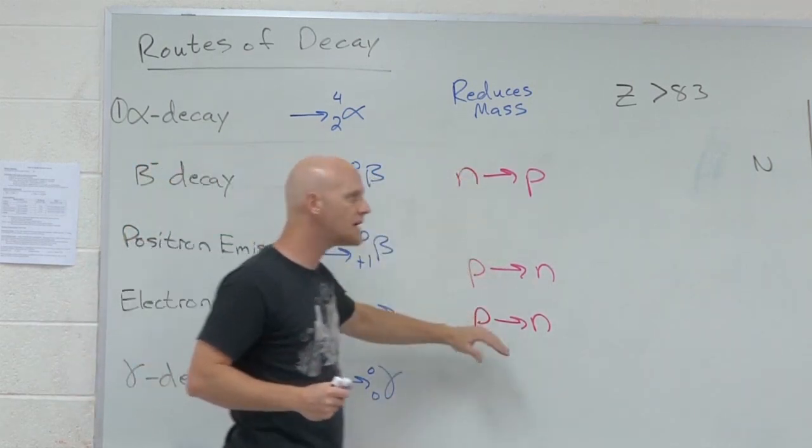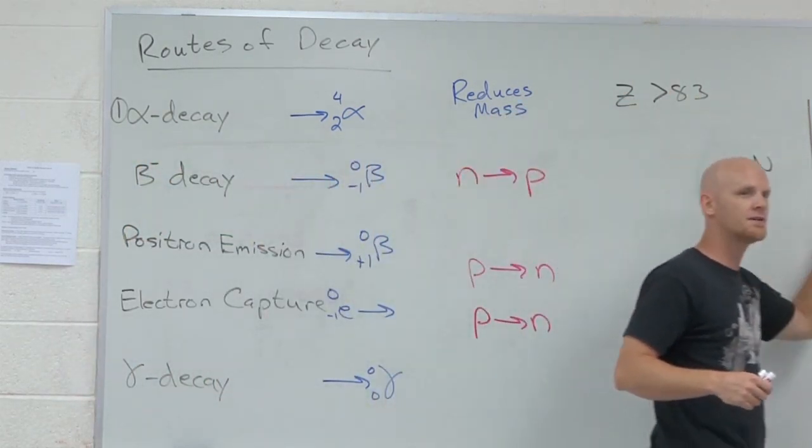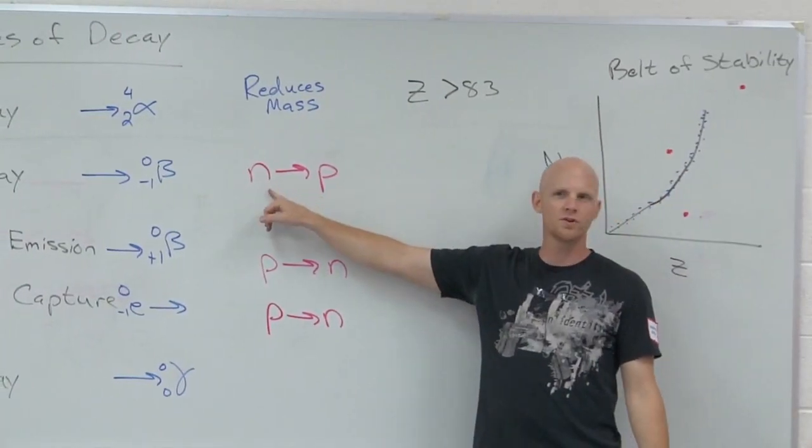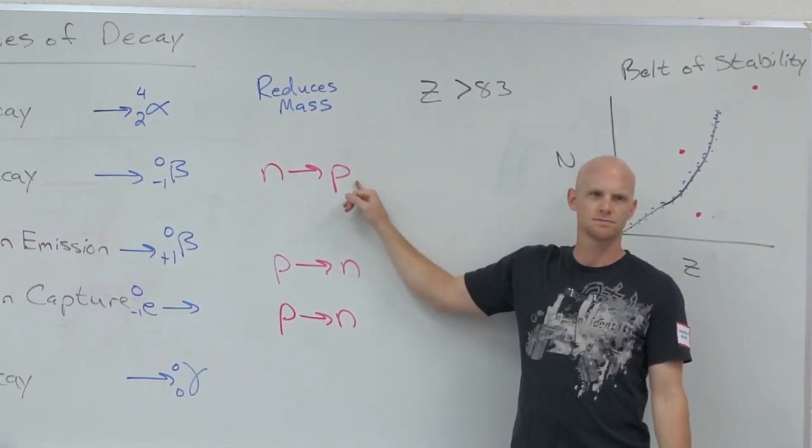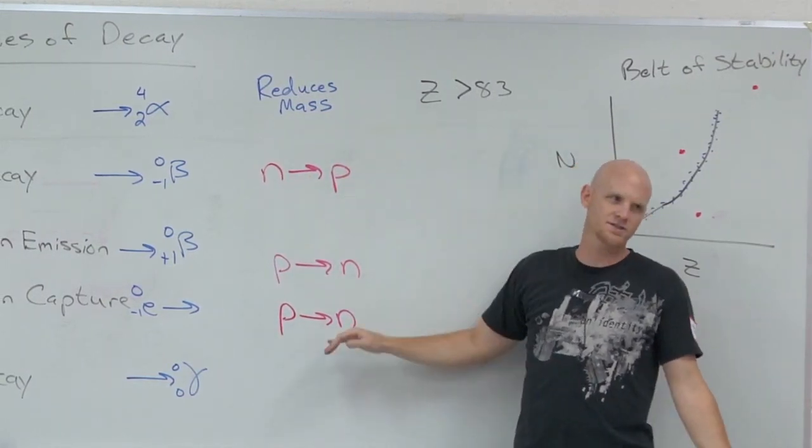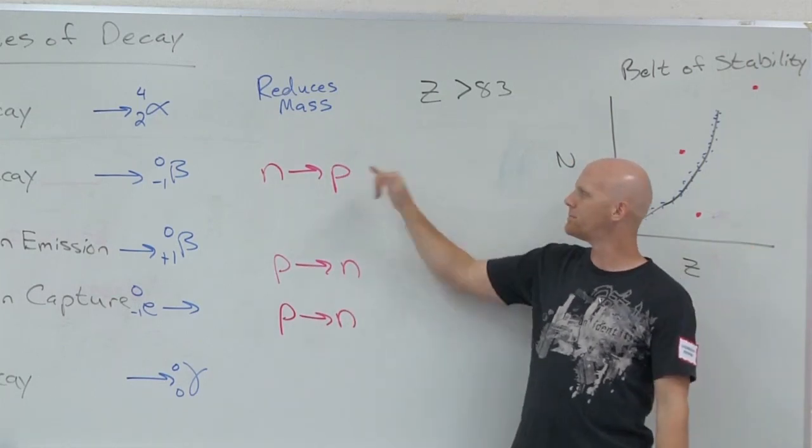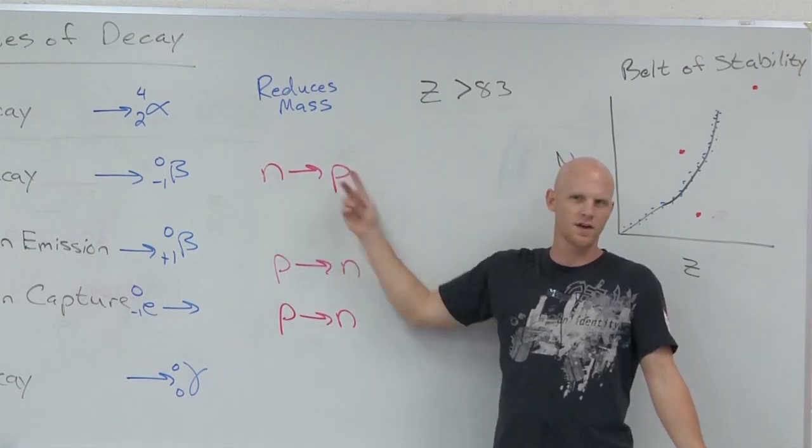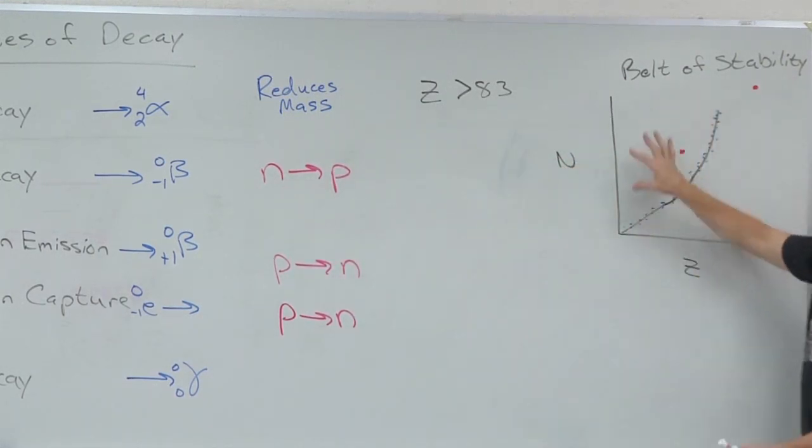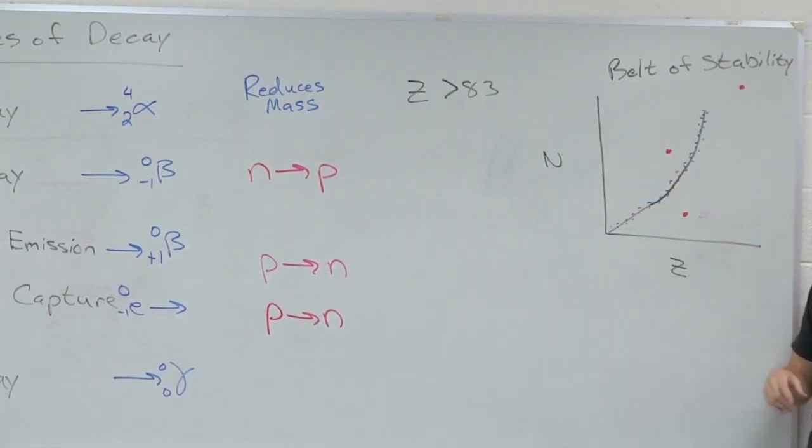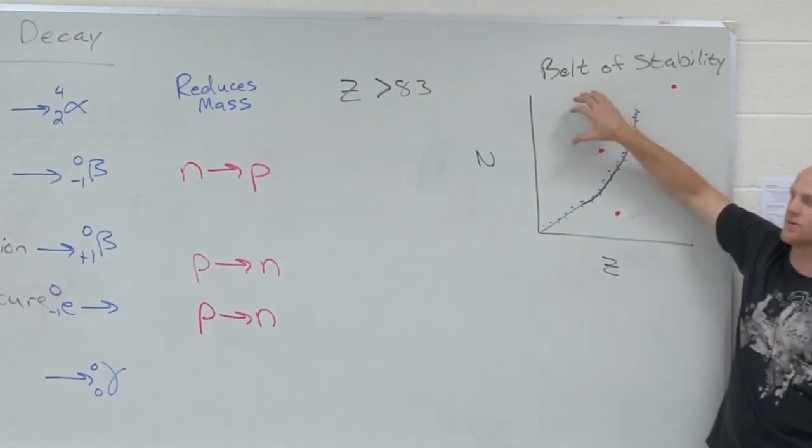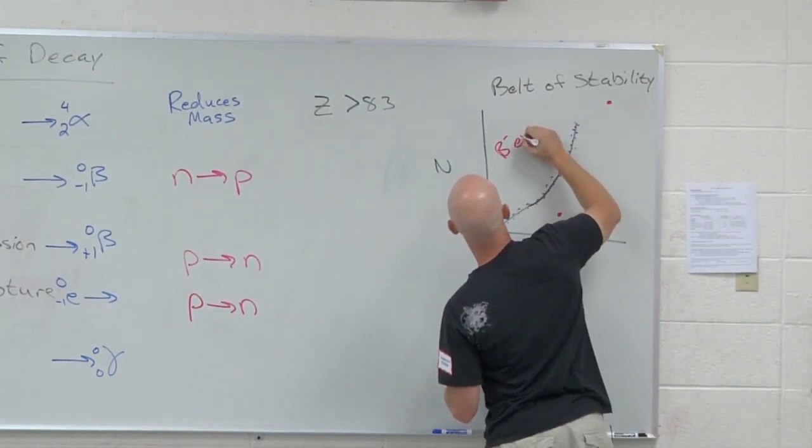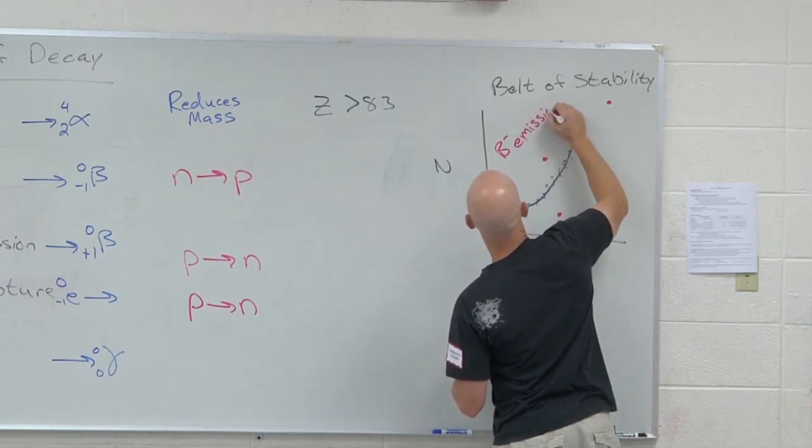But the next three, we're going to talk about in the context of the belt of stability. For beta decay, electron emission here, why would you want to turn a neutron into a proton? Well, the answer to any of these questions is to get more stable, but we want a little bit more concrete answer there. Why would you turn a neutron into a proton? Well, if you have too many neutrons and not enough protons. Where would you be on this graph if you had too many neutrons and not enough protons? Above the belt of stability. If you're up here, if you're like this guy right here, you're going to want to do beta decay or beta emission.